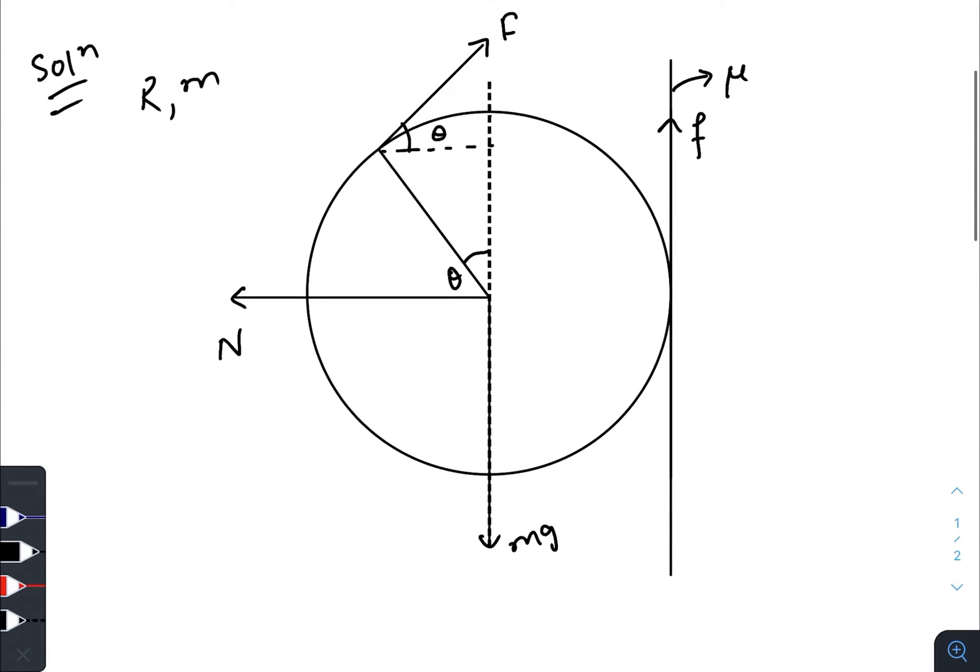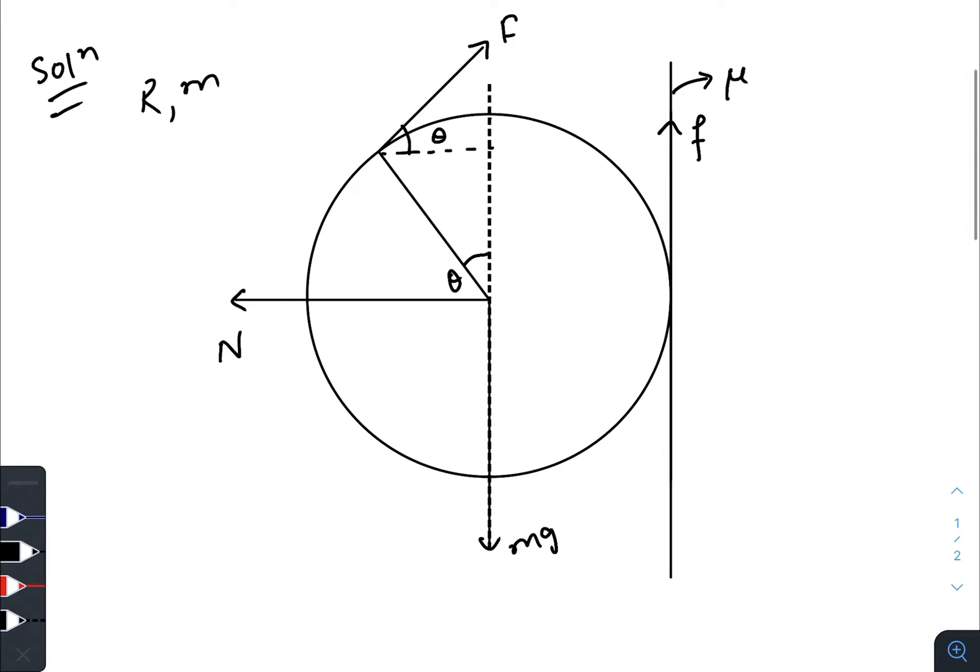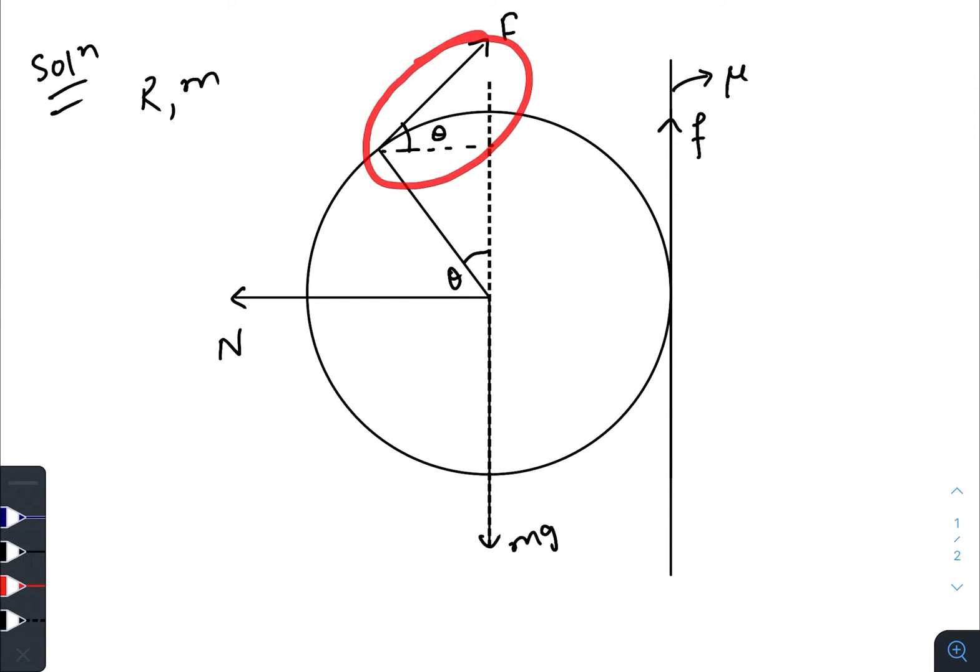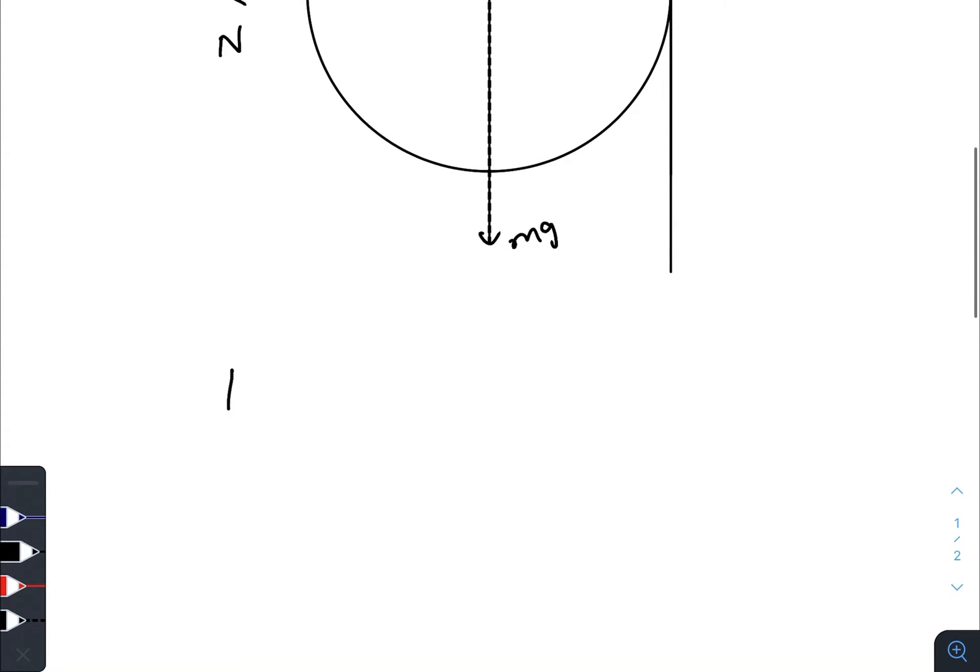So for pure rolling, what are the vertical forces? The vertical forces are F sin θ, and friction, and mg.